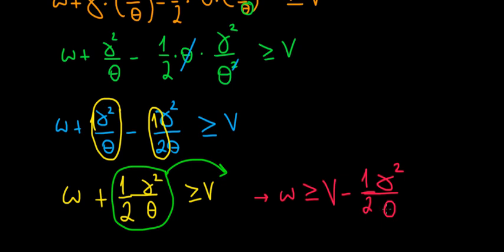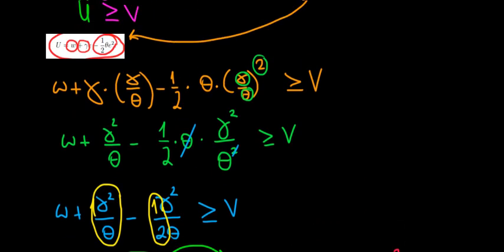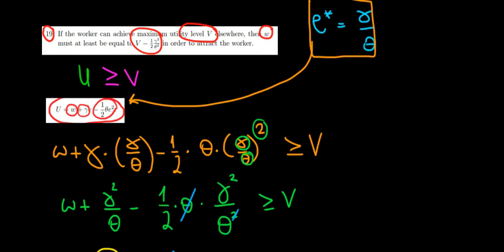Checking against the answer key, they have V minus one half times gamma squared divided by 2 theta squared, but we only found theta. So this answer is not correct — the answer is false — and we are done.